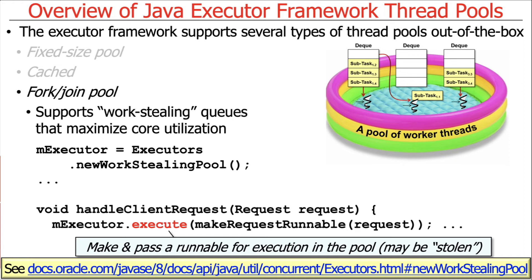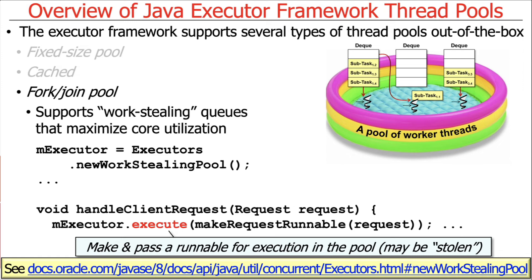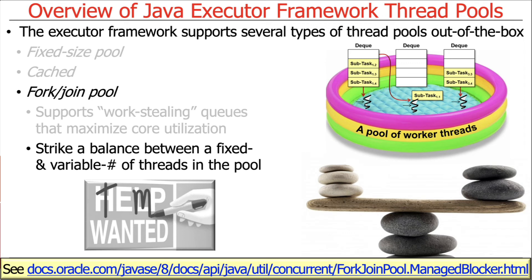What's different about the fork-join pool is that each thread in the pool has its own internal deque — a double-ended queue — from which you can add and remove items from both the front and the rear. If a thread's deque is empty, it will steal work from the end of some other thread's deque, with the goal of maximizing core utilization. The fork-join pool is designed to balance a fixed number of threads with the ability to add additional threads automatically under certain circumstances.